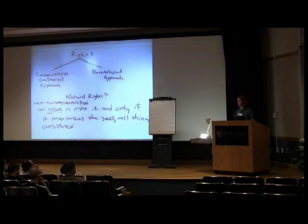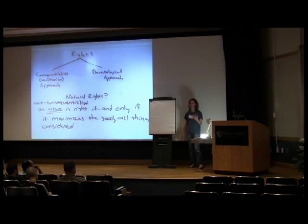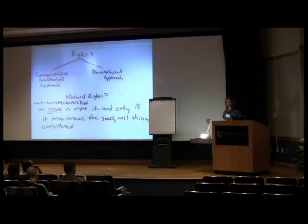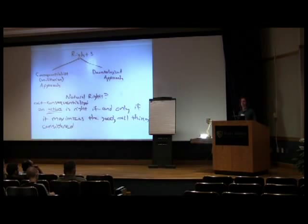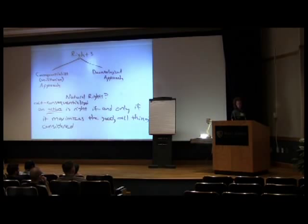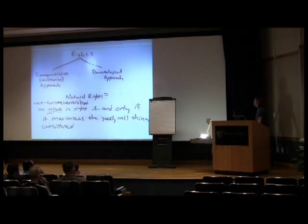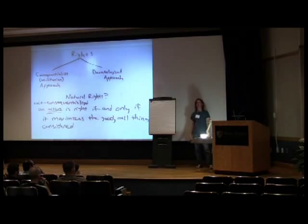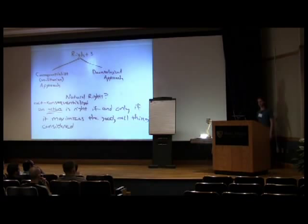Do we bite the bullet? Do we say: if consequentialism is the right way to go, the view that seems most plausible at a level of generality, we're just going to have to buy into the bad implications that come from it, because overall we're trying to bring about the best overall consequences? That's one possibility — bullet biting is an option. On the other hand, another strategy might be to argue that the story I've told is just a red herring — not something that's going to be a feature of a world where a plausible consequentialist view predominates. I kind of want to take that latter approach and see where we can go with it.